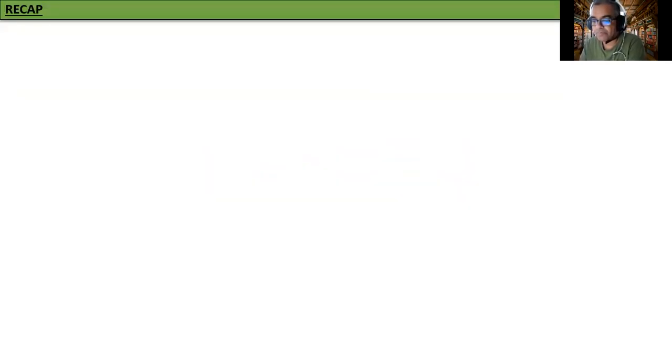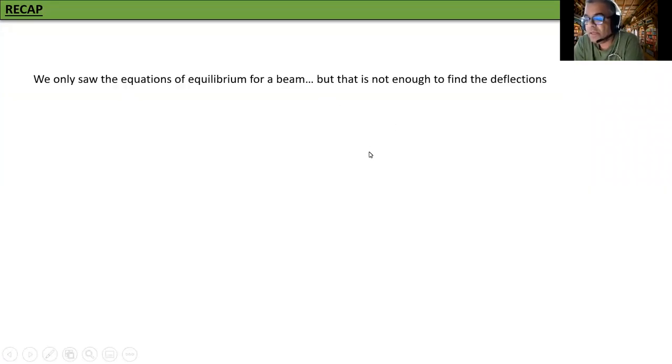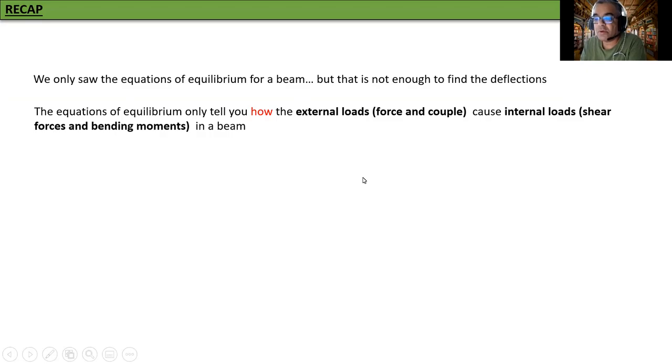Recap. We only saw the equations of equilibrium for a beam, but that is not enough to find the deflections. The equations of equilibrium only tell you how the external loads, forces and couples, cause internal loads, shear force and bending moments in a beam. We need to combine that with how the internal loads cause beams to deform.